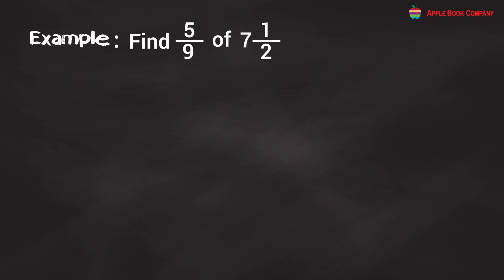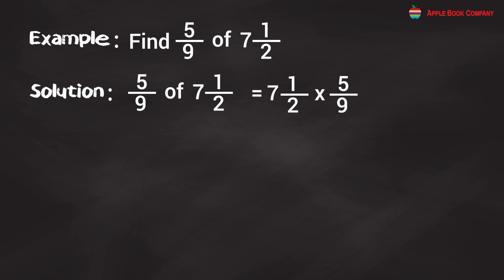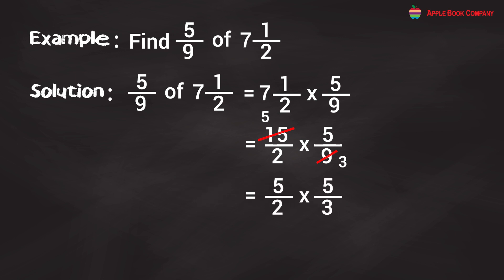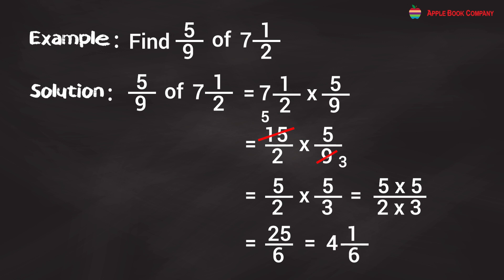Example: Find 5/9 of 7 and 1/2. Solution: 5/9 of 7 and 1/2 = 7 and 1/2 × 5/9 = 15/2 × 5/9. We can reduce 15 and 9: 3 × 3 = 9, 3 × 5 = 15, giving 5/2 × 5/3 = 25/6 = 4 and 1/6.